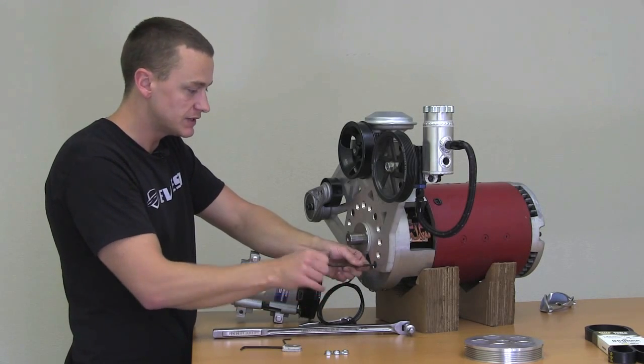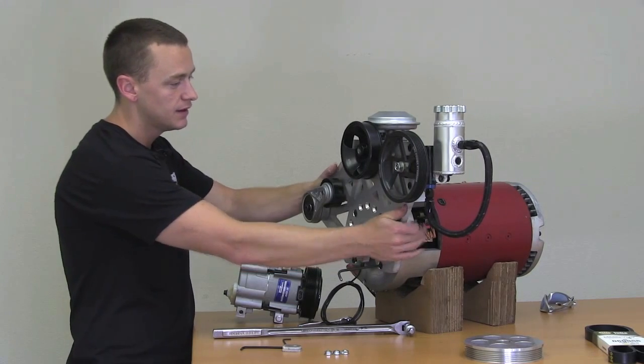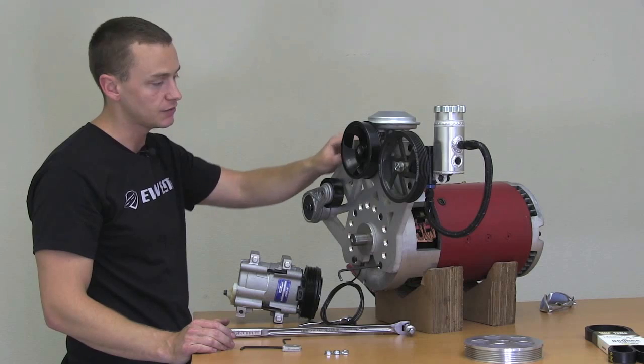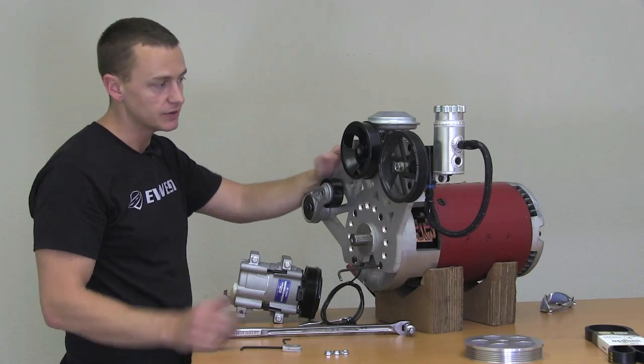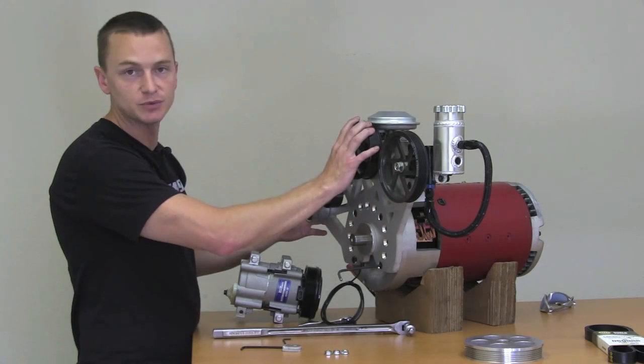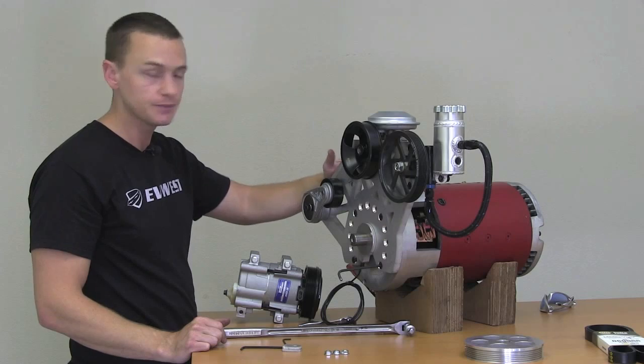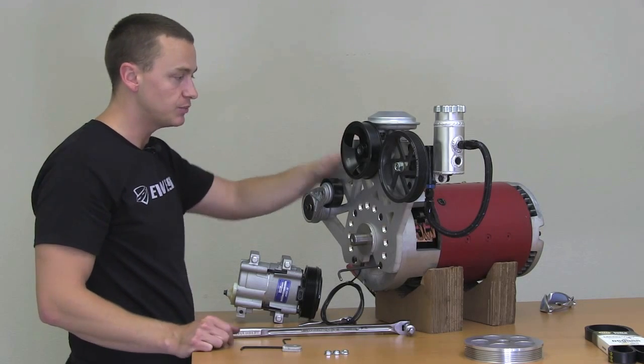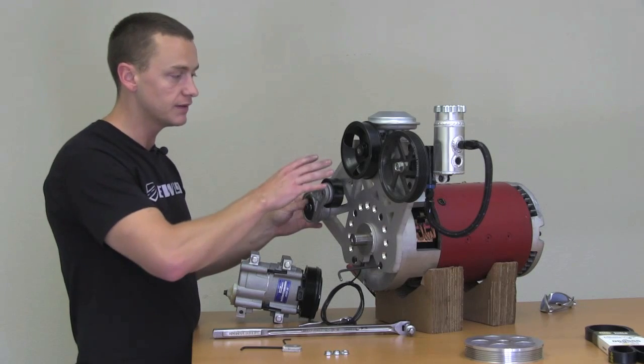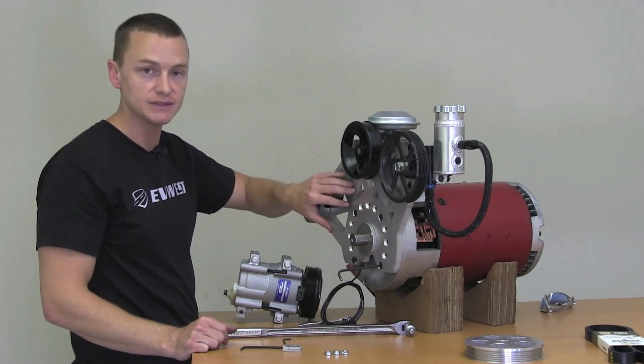Now the beauty about this system is that this side can be swapped out for any air conditioning pump that you have. That's the design of it. These components, the valves can be changed in this side. Vacuum is pretty much vacuum, so you're good with every vehicle there. The only thing that does really change is the air conditioning. So this bracket can be pulled off, and if you send in your air conditioning compressor, we can build a bracket that will mount your air conditioning compressor to our system.